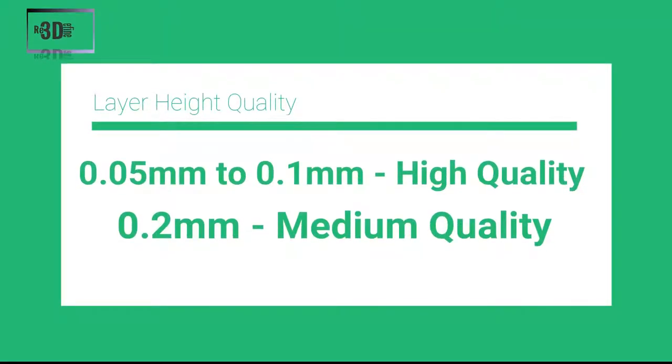In general, layer height of 0.1 mm and 0.15 mm is considered to be high quality, while 0.2 mm is regarded as medium quality. It is very easy to set the layer height in the 3D slicing software.